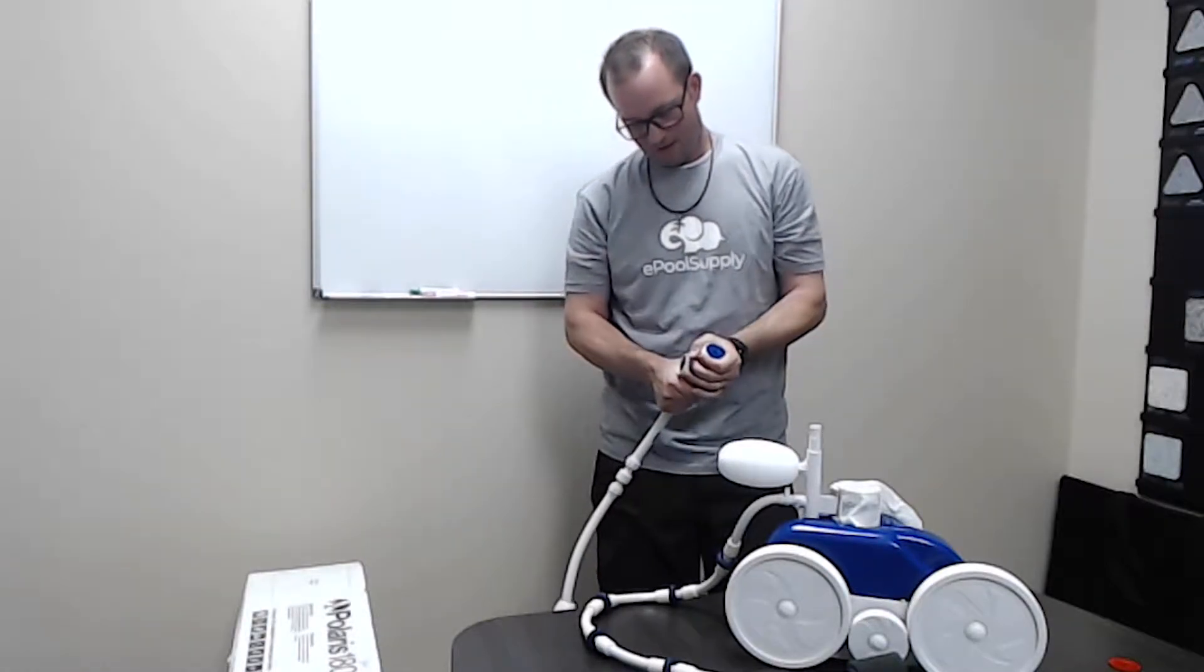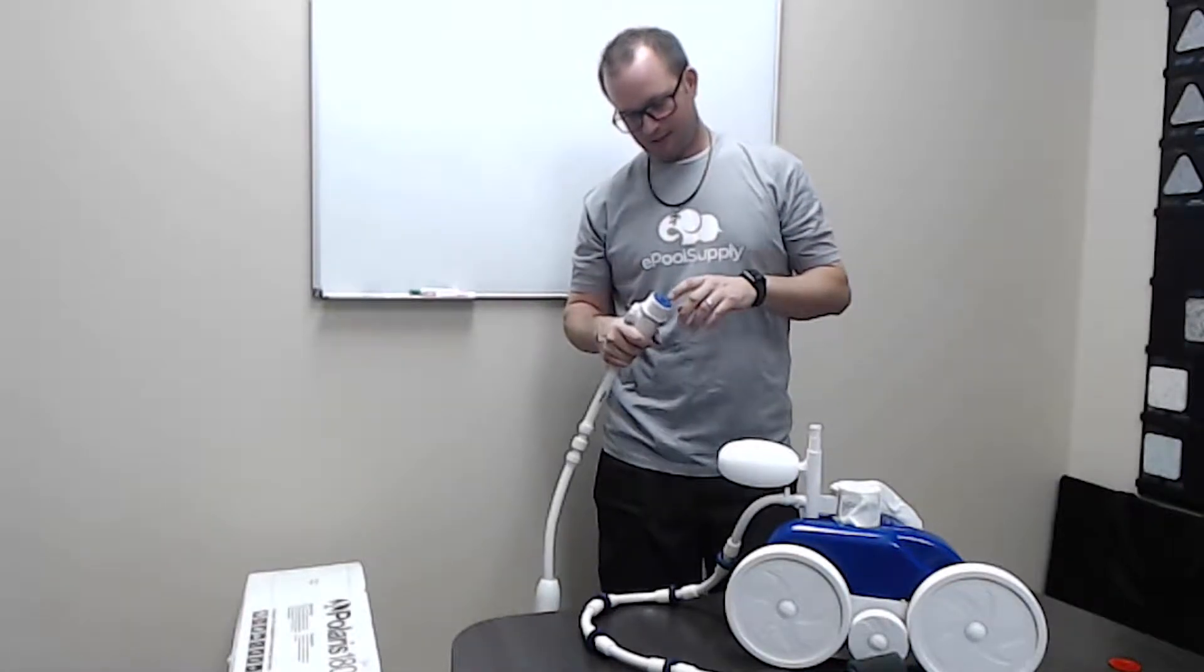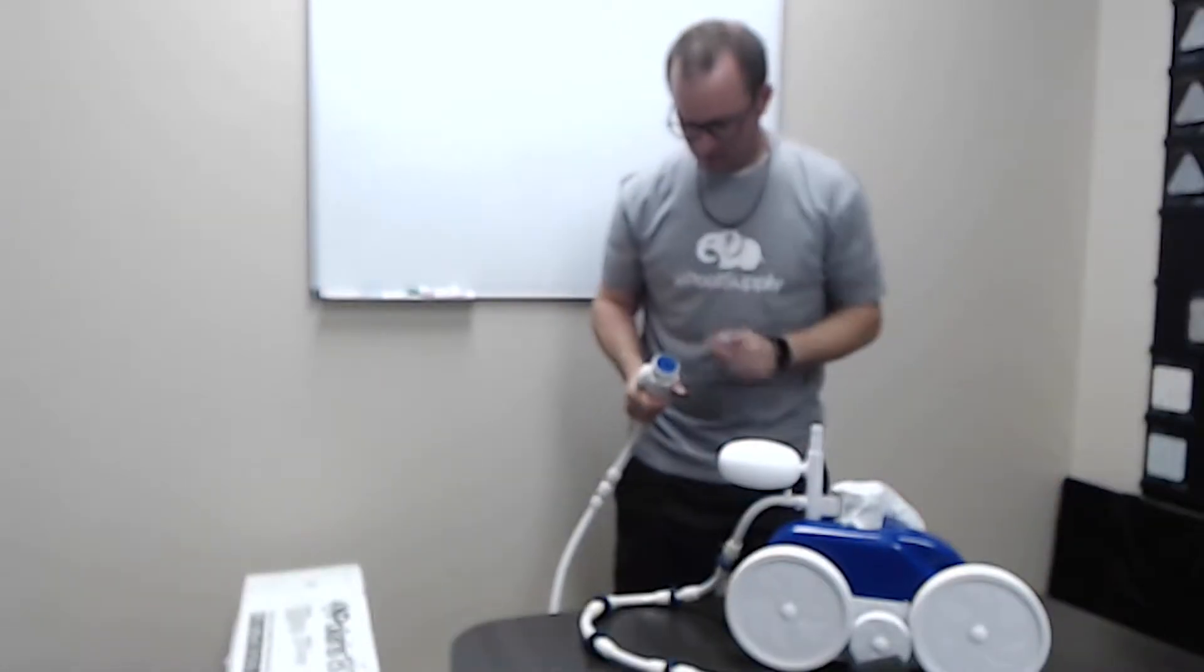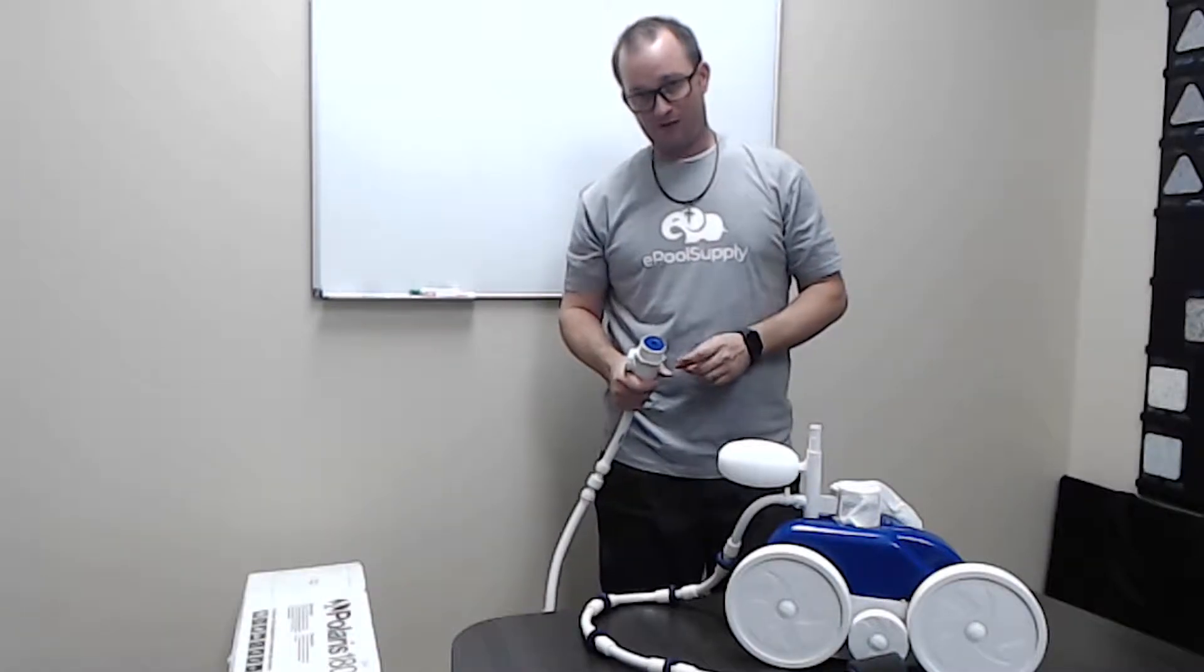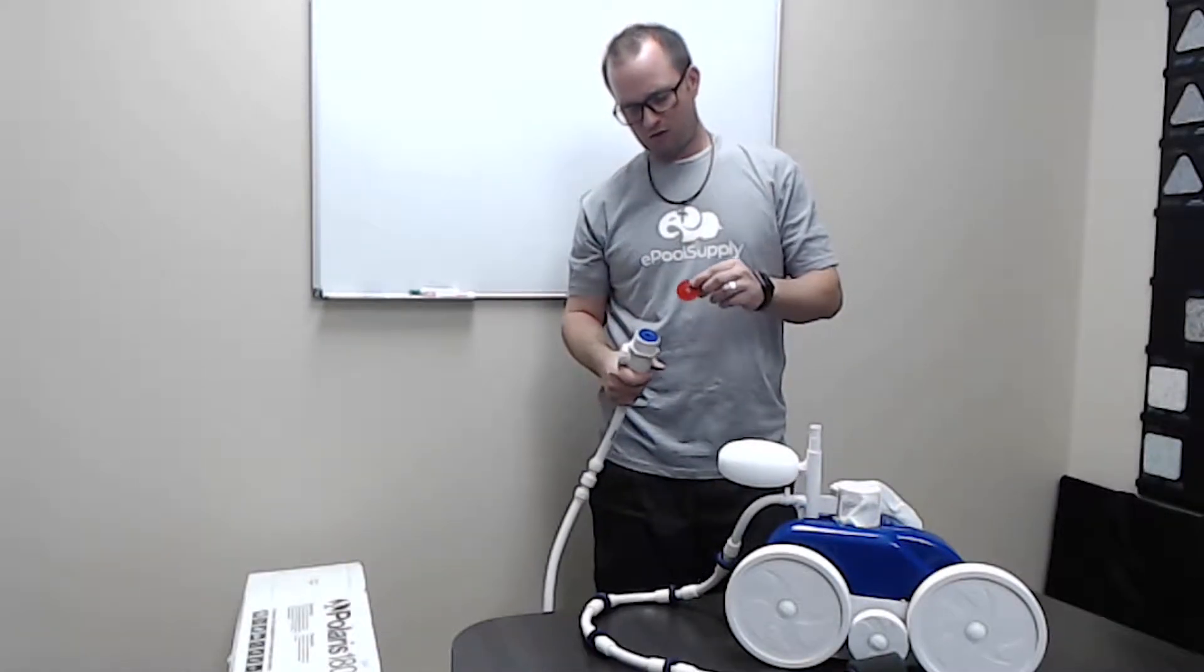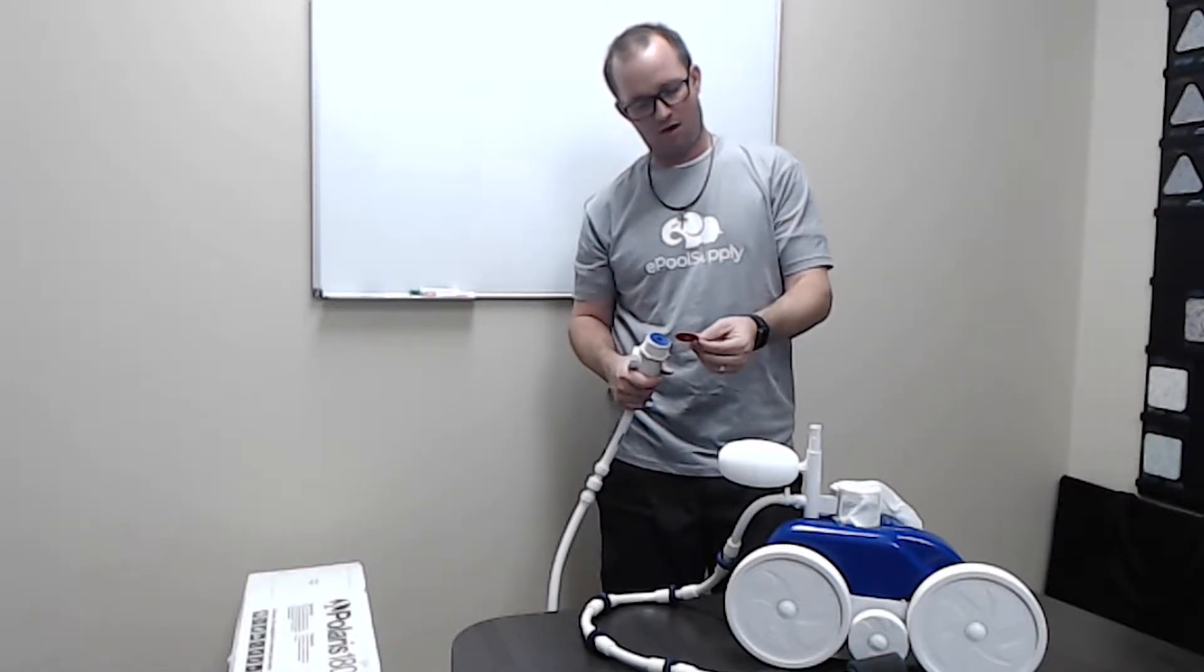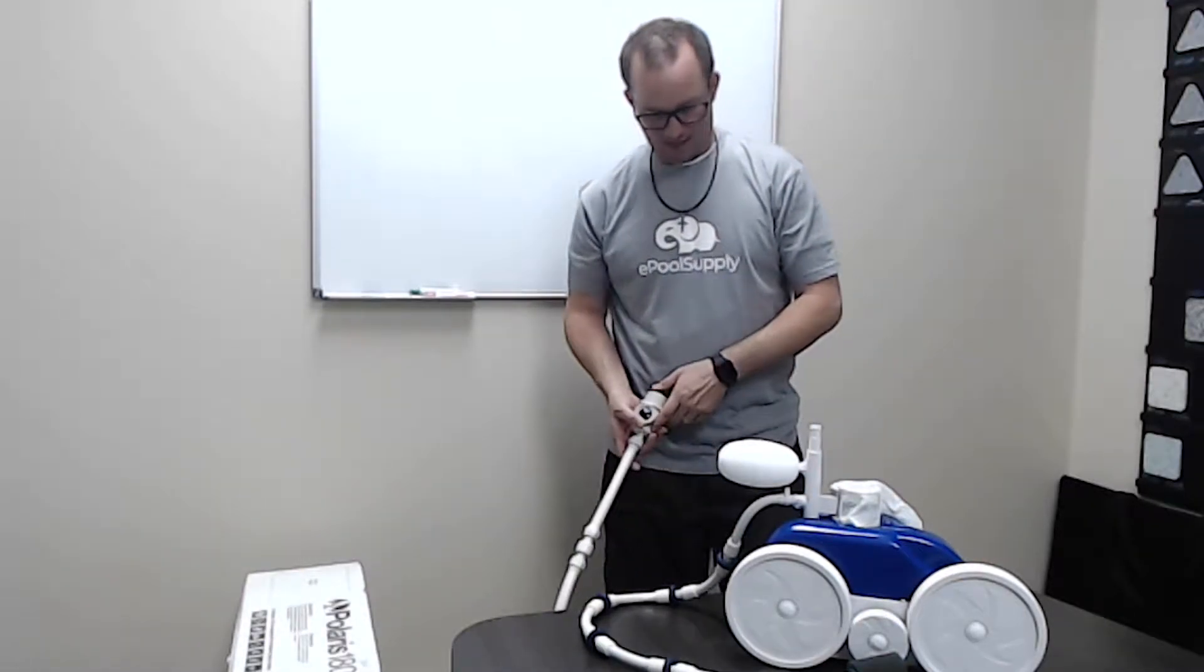This is your wall fitting. It actually threads into an inch and a half wall fitting that's female threaded, because this is male threaded. This is your flow adjustment. This allows more water than this one. If you've got too much water, pop this one out and put the red one in. This comes inside the warranty card bag.